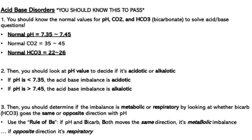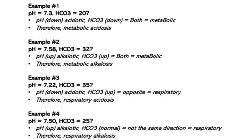Keep this in mind and memorize the rule of B's. If the pH and the bicarbonate are both in the same direction, then it is metabolic. If they are in different directions, then it is respiratory. They will give you an arterial blood gas with 8 values. You will look at pH and bicarbonate, then look at the direction they are going. If they are both down or both up — basically in the same direction — then it is metabolic. If they are in different directions, it is respiratory.